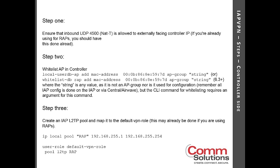The third step is to make sure you have an L2TP pool, which can be specific to IAPs or reused from an existing remote AP pool. Just make sure you won't exceed the pool capacity — for example, 20 remote APs and 20 IAP clusters would require 40 addresses. Then make sure your default VPN rule is mapped to use that L2TP pool.